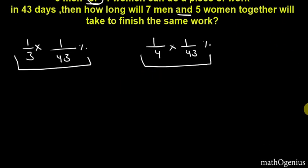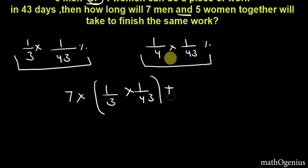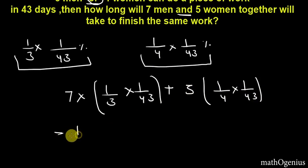So now we can solve for 7 men and 5 women. So 7 multiply work done by individual, which is 1 by 3 into 1 by 43 for individual men. Let's not use this percent for now. Plus 5 women, and this is for women.